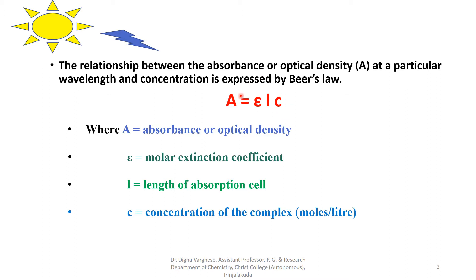The complexes absorb light in different regions, while metal ions absorb light in other regions. By this method we can measure the concentration of the compound.